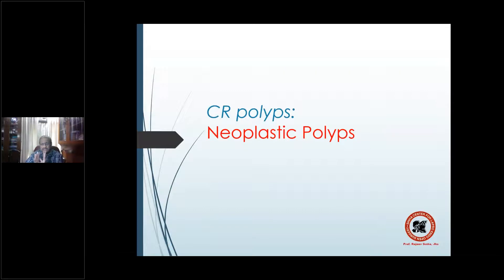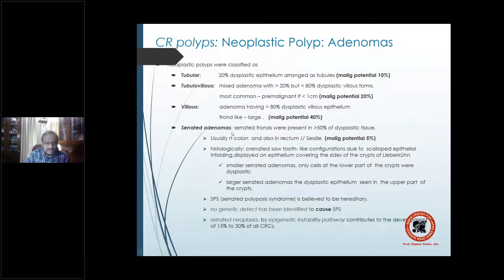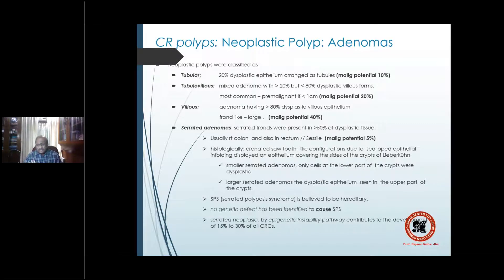The most important group for both occurrence and subsequent development of colorectal cancer is the neoplastic polyps, known as adenomas, classified as tubular, tubulovillous, villous, and serrated. In the younger age group, the juvenile polyp is most common, but taken as a whole, adenomas are the most common polyps.